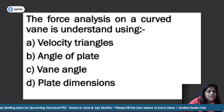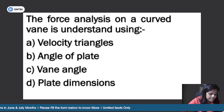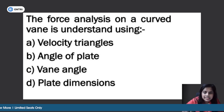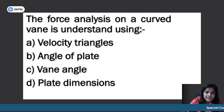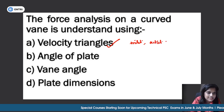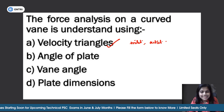Sixth question: the force analysis on a curved vane is understood using — velocity triangles, angle of plate, vane angle, or plate dimensions. In the curved vane, we use velocity triangles. There is an inlet velocity triangle and an outlet triangle. The force analysis on a curved vane is done with the help of velocity triangles.